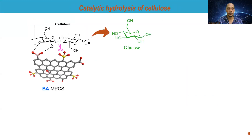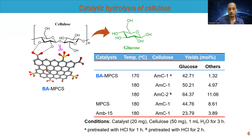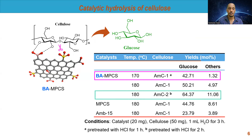The catalytic activity of the developed carbonaceous solid acid was evaluated for pre-treated cellulose under mild reaction temperature. The results show that the boronic acid-containing sulfonated catalyst shows high catalytic efficiency to produce high yield glucose. This is attributed to the presence of boronic acid, which is able to react with the hydroxyl groups of cellulose, improving the hydrolysis rate and glucose yield.